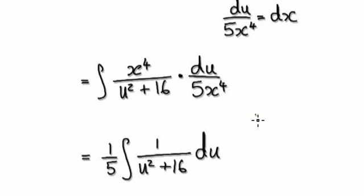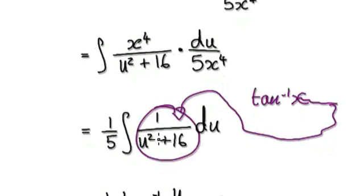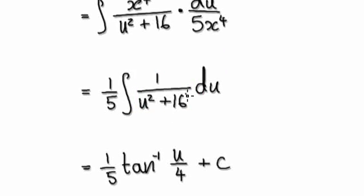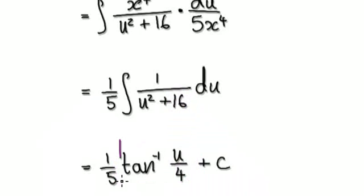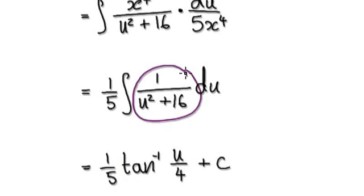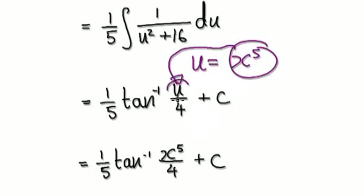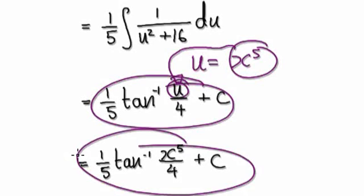So once you get to this stage, you should realize that when you differentiate inverse tan, you're going to get something similar to this. So to integrate it, it would be pretty much the square root of this. If you differentiate inverse tan of this thing here, it will give you this thing here. So integrate this, it will give you this. Now we can put u equals x to the power of 5 back in, and then this whole thing will then become this.